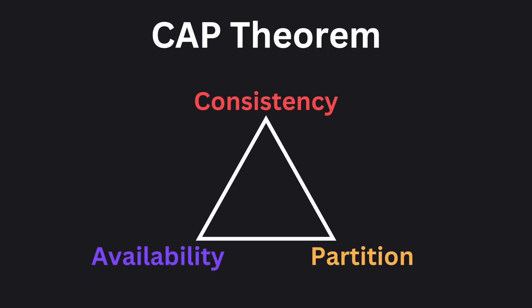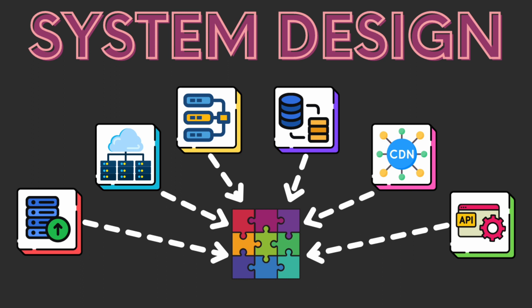In all cases, you should remember the CAP theorem, which states that you can only have two of these three: consistency, availability, and partition tolerance. When designing a system, you should prioritize two of these based on the requirements given in the interview. If you're interested in the other parts you'll encounter during the system design interview, I recommend you watch the next video about six essential concepts you need to know for system design interviews.